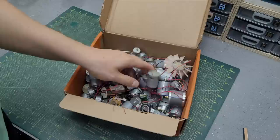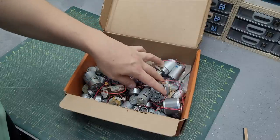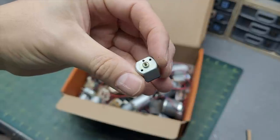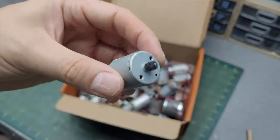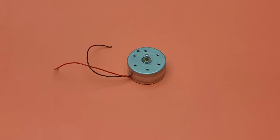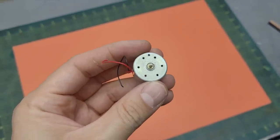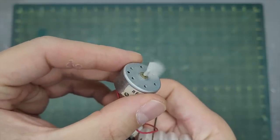Every time I take apart a dead electronic part, I save its insides, and that led me to this huge collection of DC electric motors. I have them in many different shapes and sizes, but for this project I decided to go with this one which is small but plenty strong.